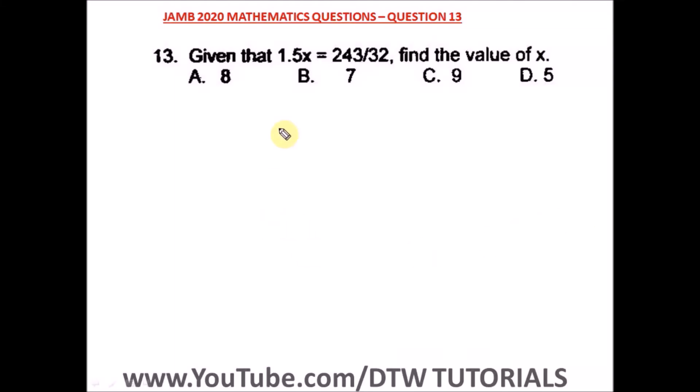We have question 13 of the JAMB 2020 mathematics questions. We are told that 1.5x equals 243/32, find the value of x.